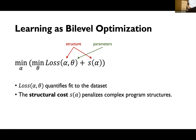So what's the learning problem here? We set up a joint optimization problem where you are trying to minimize a loss function that depends on both alpha and theta. On top of that, you don't want extremely complex program structures, so there is a penalty for complexity captured by a cost function on the program structure. You are optimizing over both alpha and theta jointly.